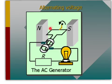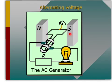Here is a diagram of an AC generator. We have this coil that is spinning anti-clockwise inside this magnetic field between north pole and south pole. A current will be induced in the coil and will flow out into the external circuit.